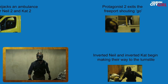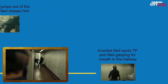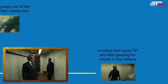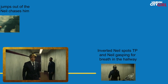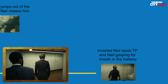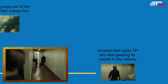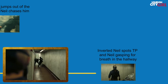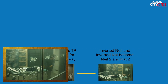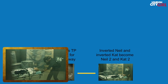When inverted Neil gets the signal from Protagonist 2, he starts making his way towards the turnstile with inverted Cat. He spies the protagonist and his past self in the hallway gasping for breath. This inverted Neil and inverted Cat is the presence that the original Neil felt when he told the protagonist that someone was in the hallway with them. As the protagonist and Neil make their way backwards through the timeline, they leave the turnstile free for inverted Neil and inverted Cat to use and revert.